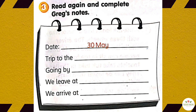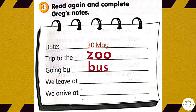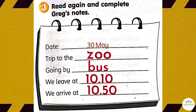Activity 3. Read Activity 1 again and complete Greg's notes. Date: the 30th of May. Trip to the zoo. Going by bus. We leave at 10.10. We arrive at 10.50.